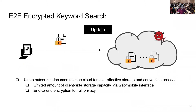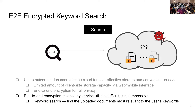In this work, we focus on the problem called end-to-end encrypted keyword search. Users outsource their documents to the cloud and interact with the service via a web portal or mobile app with limited client-side storage capacity. Users apply end-to-end encryption with their local secret key before uploading documents to the service. End-to-end encryption poses challenges for the service to provide useful features such as keyword search, which returns relevant documents to the user's keyword query.